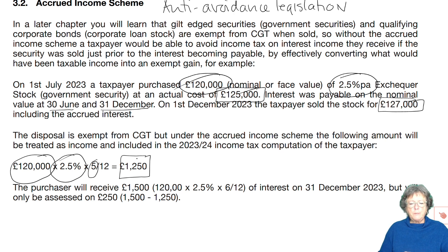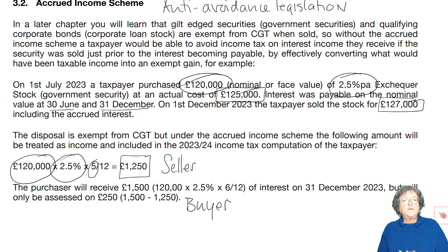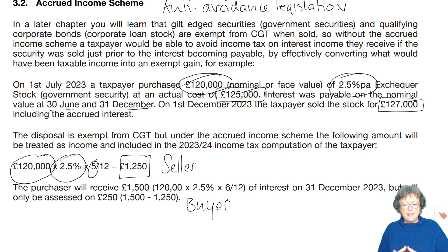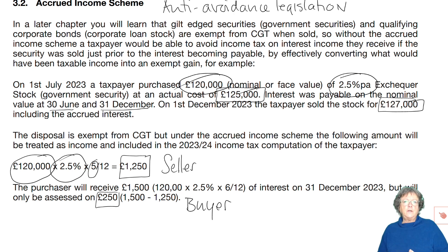Now the person who has bought — so this is the seller's side — the person who is buying will on 31st of December receive interest of £1,500 which is the interest they would normally receive. However, because £1,250 has been taxed on the seller, the buyer only pays tax on £250 under this scheme. Otherwise that would be over-penalising, because the seller would pay tax on £1,250 and the buyer on £1,500, and obviously that's not fair.